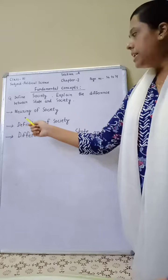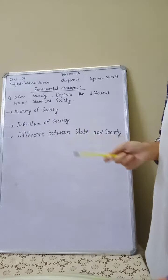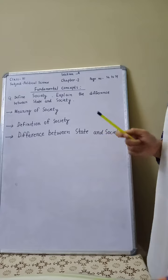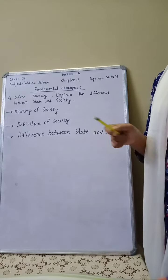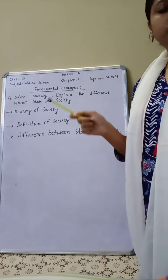First we will discuss about the meaning of society. A society is a human organization whose members click together and cooperate with each other for the fulfillment of their common objectives.